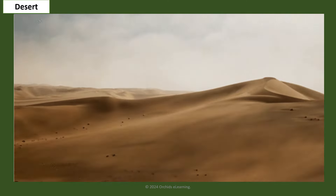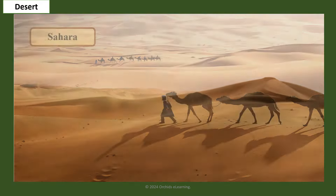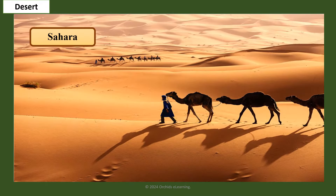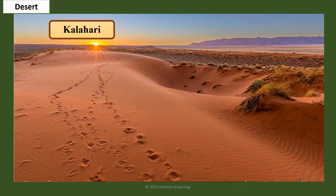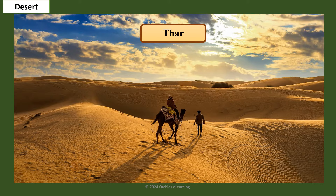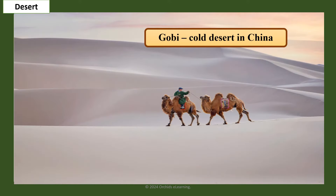Deserts are areas that receive very little rainfall. The Sahara, Kalahari, and Antarctic are some deserts. Though deserts are mostly considered to be hot, some are very cold — for example, the Gobi Desert in China.